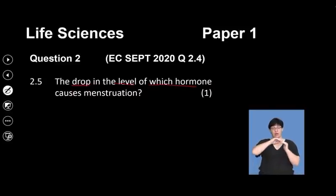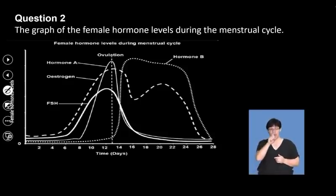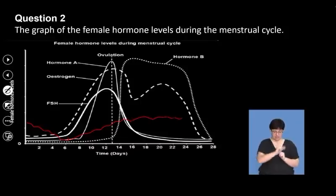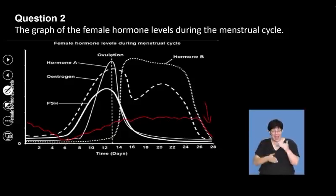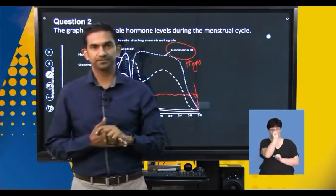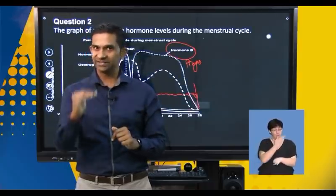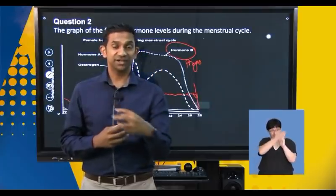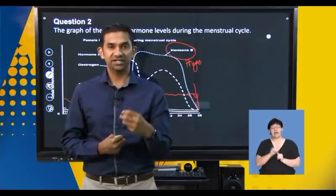The drop in the level of which hormone causes menstruation? Menstruation takes place from day 1 to around day 6. Looking at the graph, there is a significant decrease or drop in the thickness of the endometrium towards the end of the 28-day cycle, and that is linked to progesterone. Progesterone functions in maintaining the thickness of the endometrium. If progesterone levels decrease, its core function of maintaining the endometrium lining will no longer occur, causing the lining to shred away from the myometrium — and that initiates menstruation.